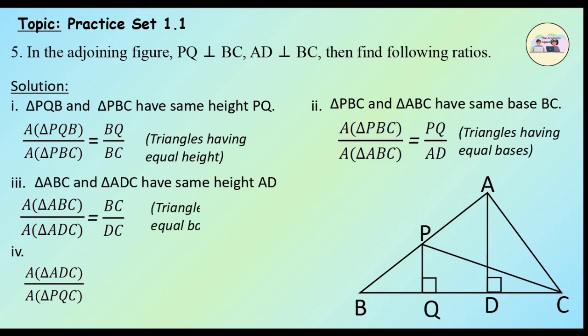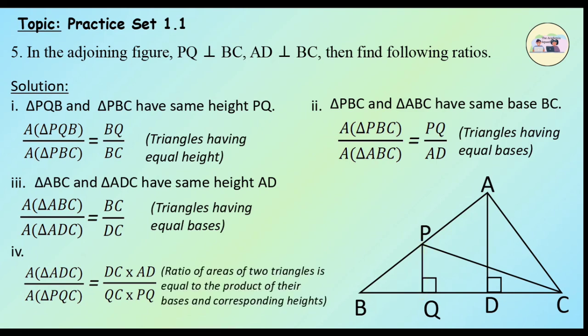And the last one: find area of triangle ADC upon area of triangle PQC. Here, the triangles don't have equal bases or equal heights. Therefore, area of triangle ADC upon area of triangle PQC = (DC × AD) upon (QC × PQ), since the ratio of areas of two triangles equals the product of their bases and their corresponding heights.